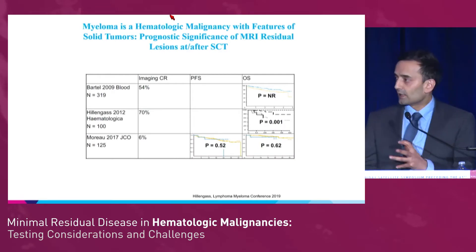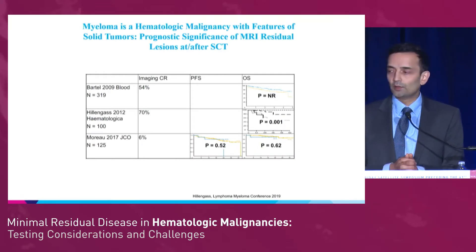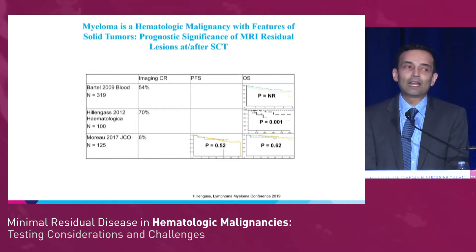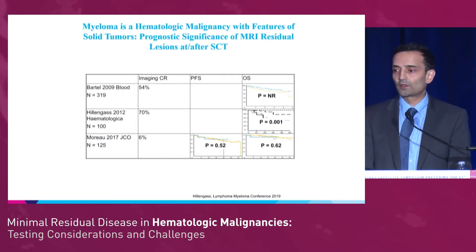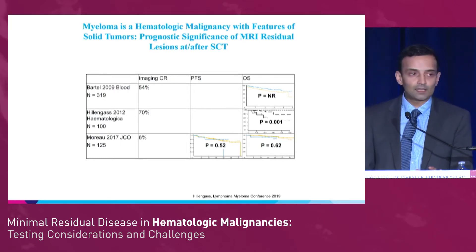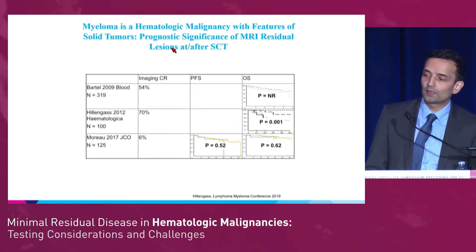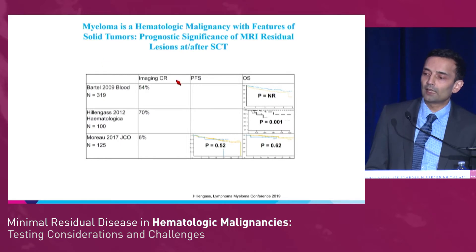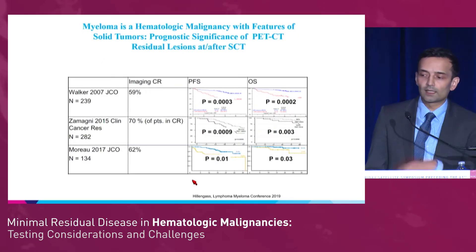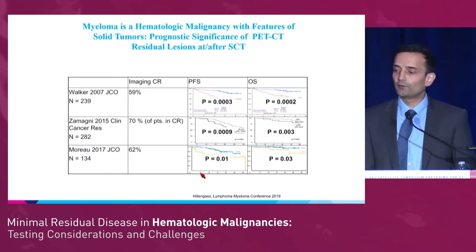What differentiates myeloma from a lot of these other diseases is that this is a hematologic malignancy with features of solid tumors. There is tremendous prognostic significance of residual osseous disease. Different papers have looked at MRI residual disease after transplant, showing that PFS and OS curves are statistically worse if you have residual radiologic disease by MRI — and the same story holds for PET. We can have patients who have no measurable disease in the blood or marrow but have radiologically positive disease.